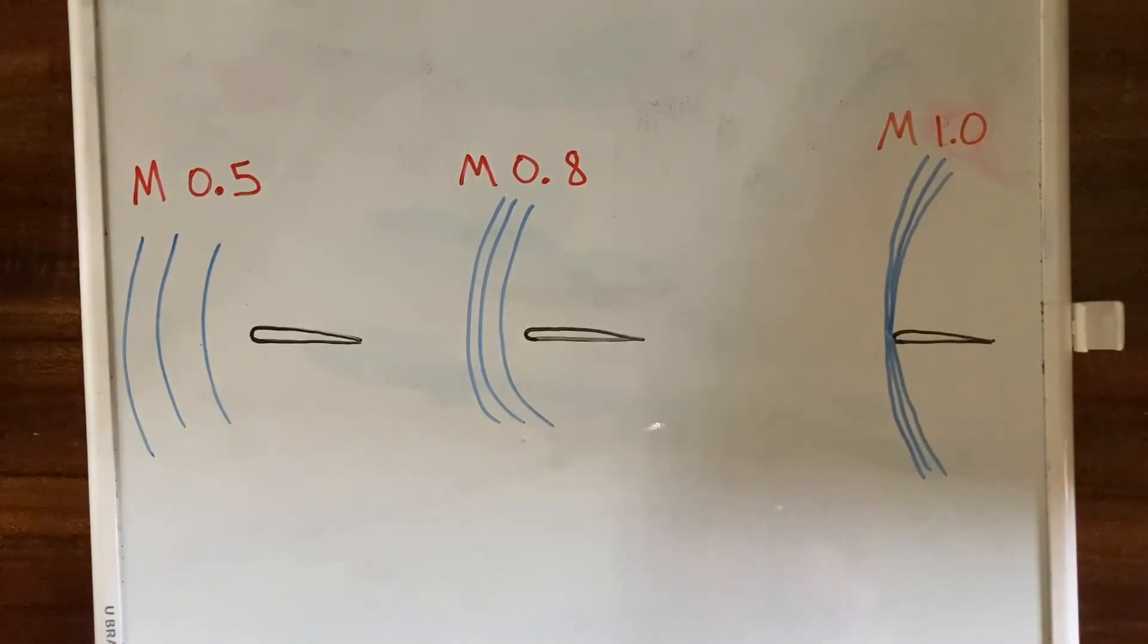Let's take a look at what happens to the air in front of an airfoil as it gets to higher and higher speeds as it approaches and then reaches the speed of sound, Mach 1.